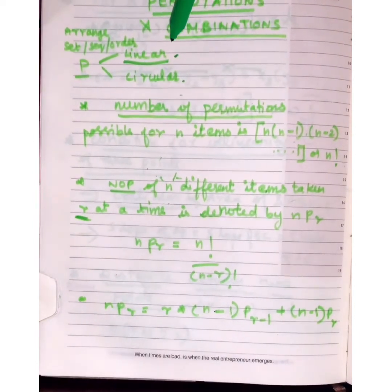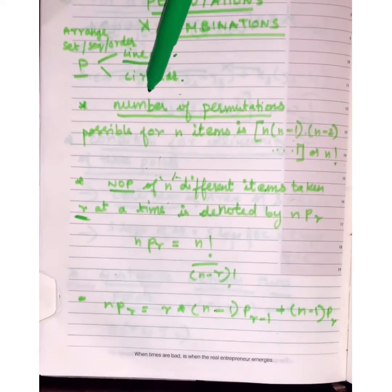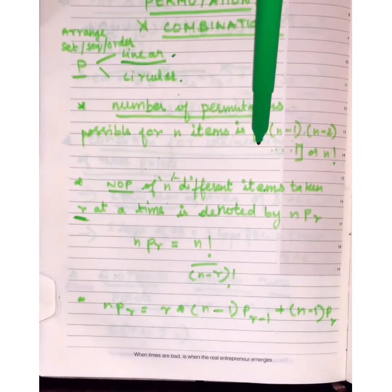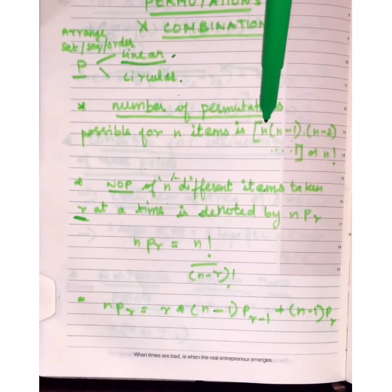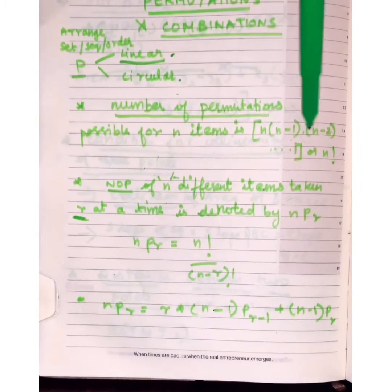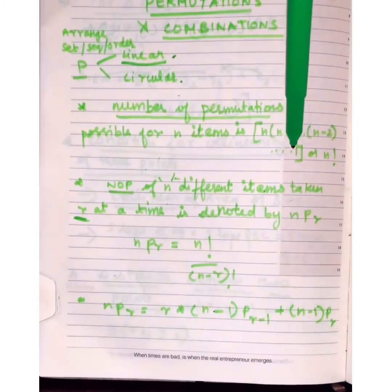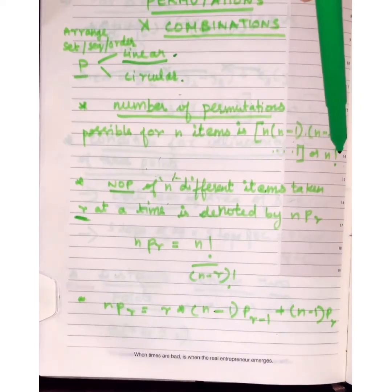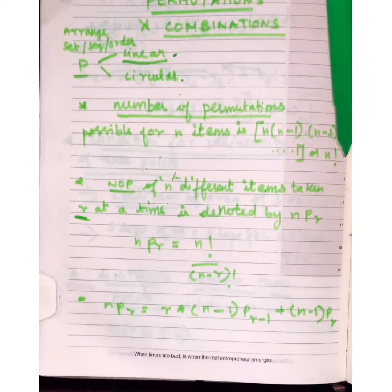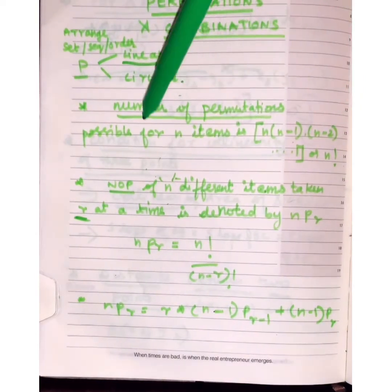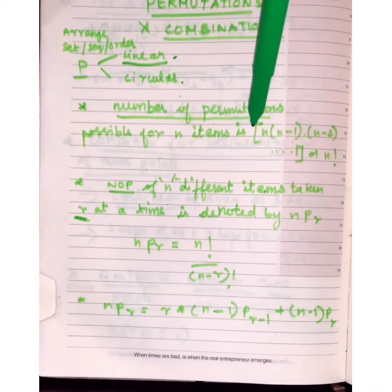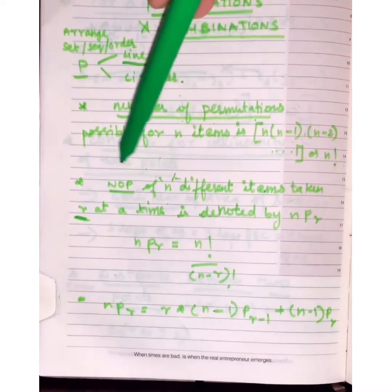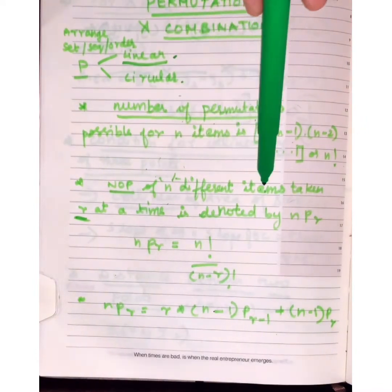For linear permutation formulas, the number of permutations possible for n items is n × (n−1) × (n−2) × ... × 1, which equals n factorial. You can use this to find the number of permutations possible for n items.